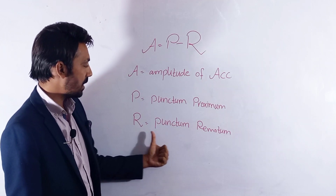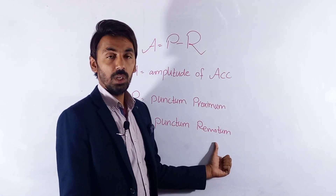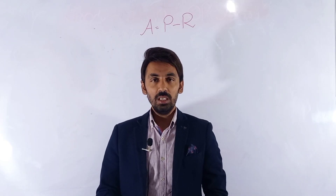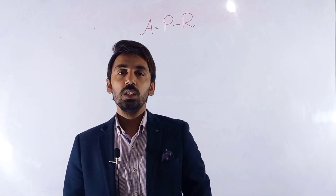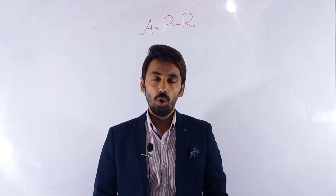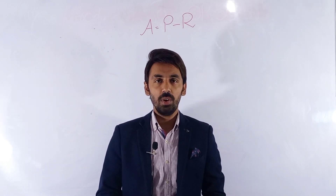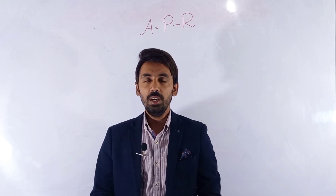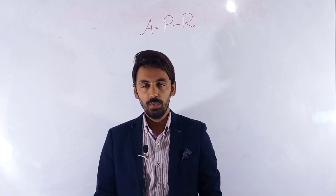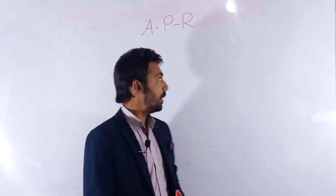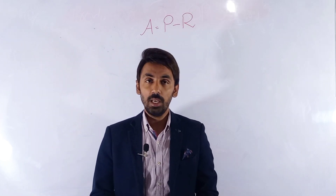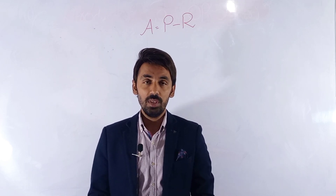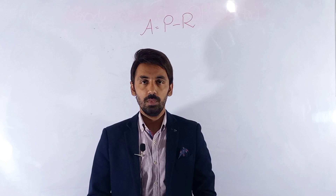The punctum proximum is also called the near point. As you know, the far point of an emmetropic or normal person is optical infinity. In different refractive errors the far point is different. You can also calculate the near point of a person using the RF rule, as discussed in the last video.